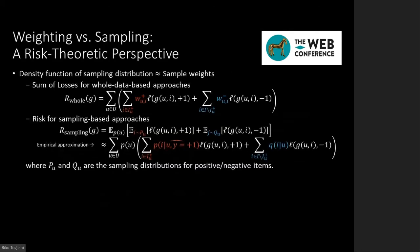From a risk-theoretic perspective, there is an intuitive relationship between negative weighting and sampling. Whole data-based approaches without sampling often introduce sample-dependent weights and aim to minimize the sum of losses with those weights. On the other hand, the risk for sampling-based approaches can be expressed as expectations over positive and negative samples. The distribution of negative samples is determined by a negative sampling strategy. In the training phase, the empirical risk can be expressed as the sum of losses weighted by the density of sampling distributions. Therefore, a sample weighting strategy works similarly to negative sampling. Based on this, we design a weighting strategy inspired by conventional negative sampling methods and install it in the weighted Bregman divergence.